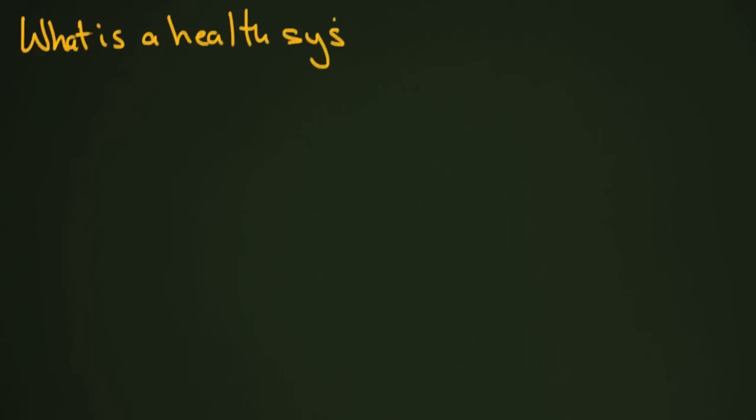What is a health system? If you go and look at the definition, you might not be very surprised, because it's basically defined as an organization of people, institutions, and resources to deliver health-related services to meet the needs of a target population. But what does that mean? What does that look like, and how does it work?